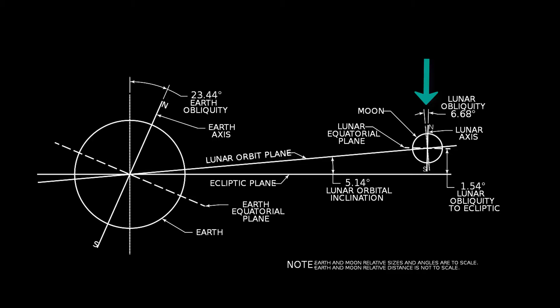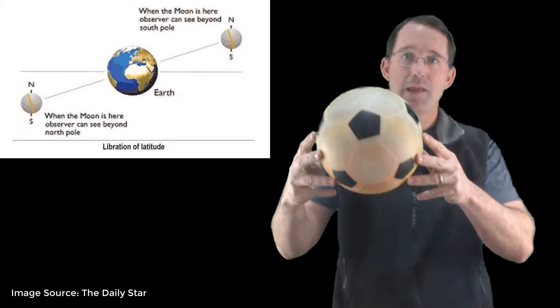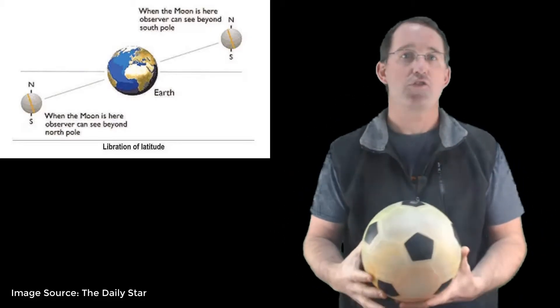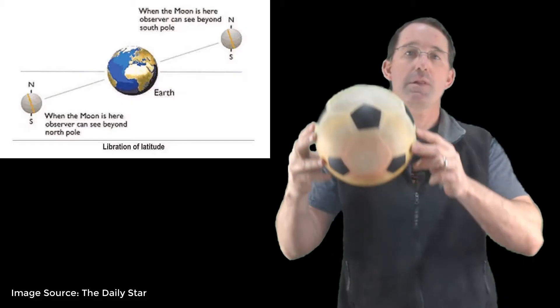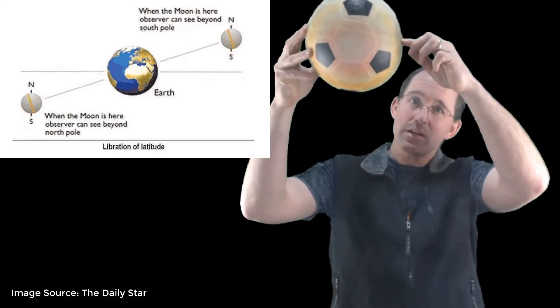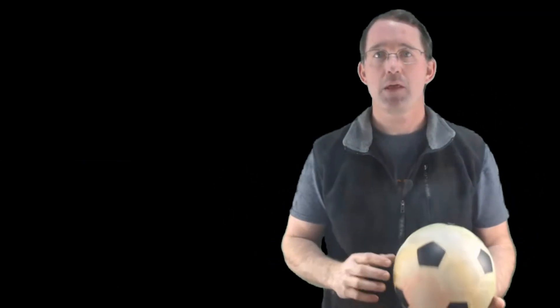And the moon's orbit is tilted compared to our orbit as well. And when you add these two effects up, it means that sometimes we are above the moon, and we can peek a little bit past the moon's north pole. And two weeks later, we're going to be a little bit below the moon, and we'll be able to peek just a little bit past its south pole. So that's what explains the up and down portion of the wobble.